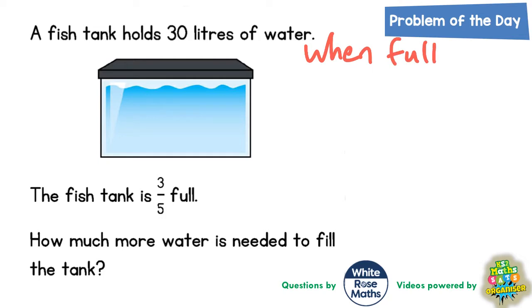Now the fish tank is only three fifths full, so what we've got to work out is how much more water is needed to fill the tank. When the tank is full it's got 30 liters.